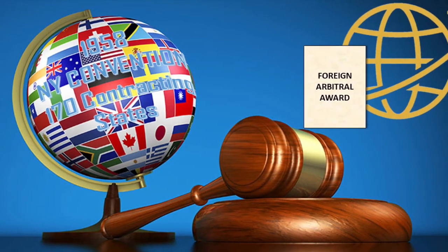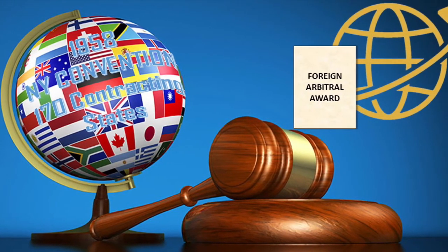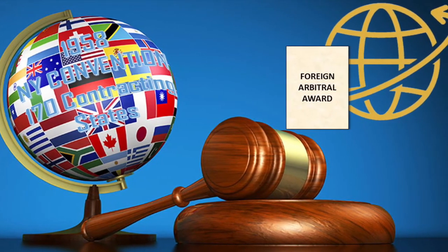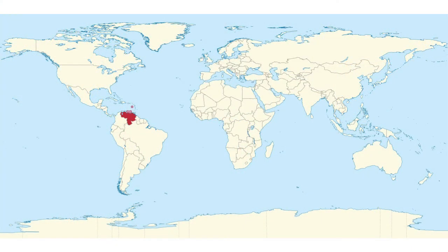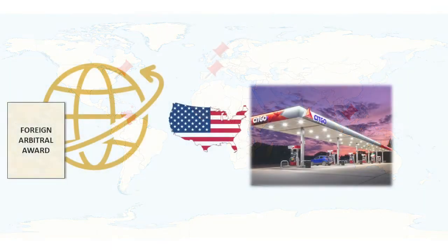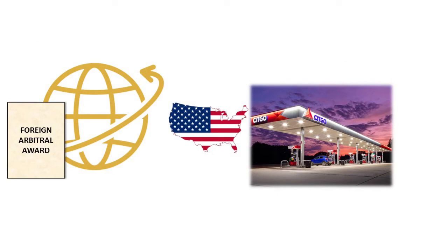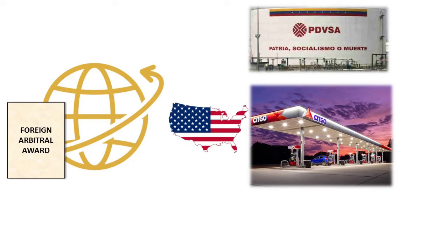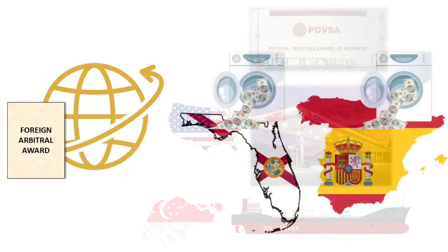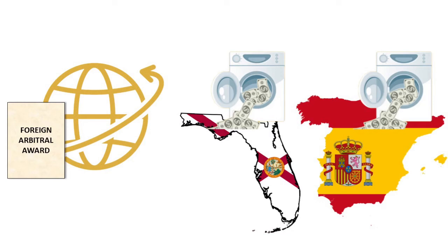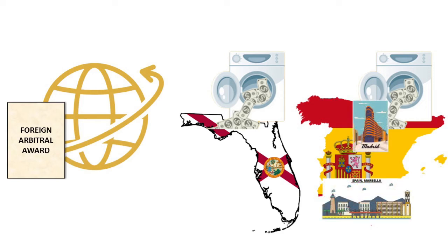An award rendered under the UNCITRAL arbitration rules can be enforced in accordance with the 1958 New York Convention, which allows for the recognition and enforcement of foreign arbitral awards practically worldwide — currently in 170 jurisdictions. Such an award could be used to attach Venezuelan assets located abroad. For instance, arbitral awards against Venezuela have been executed against assets of Citgo, a U.S.-based subsidiary of PDVSA, the Venezuelan National Oil Company. Others have been executed against oil tankers owned by PDV Marina, another subsidiary of PDVSA. More recently, enforcement actions have been taken also against individuals indicted of money laundering on behalf of the Venezuelan government.